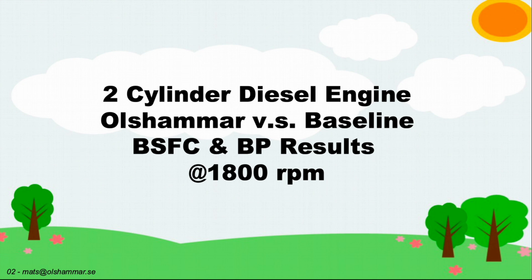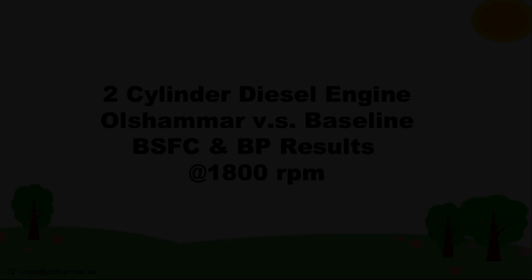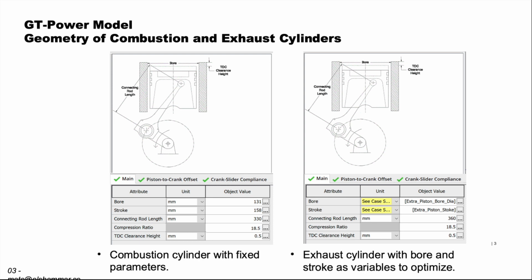The simulations were done on a two-cylinder diesel engine, and we compared the baseline engine with the Olsammar engine with regards to brake specific fuel consumption and brake power at 1800 RPMs. Here we have the geometry of the cylinder. To the left we have the combustion cylinders and they are modeled after the Volvo D13 diesel engine.